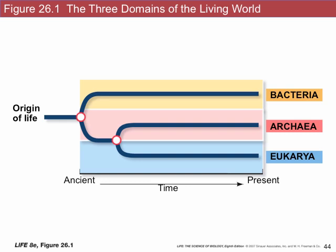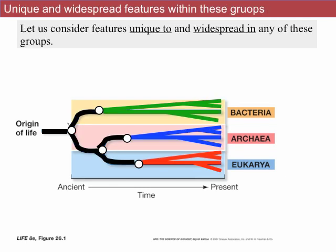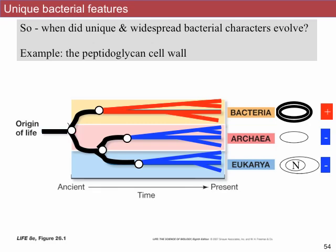People did not expect that archaea would be a sister group to eukaryotes — they expected bacteria and archaea to be sister taxa relative to each other, just because archaea look like bacteria. But that is not what the tree looks like. The best model for the tree of life shows bacteria as the deepest branch with archaea and eukaryotes as sisters. We will talk about some complexities in this model in subsequent lectures, but for the time being we're going to assume this rooted tree of life is correct, and we're going to walk through many of the features of bacteria, archaea, and eukaryotes and trace their evolutionary history on this tree.